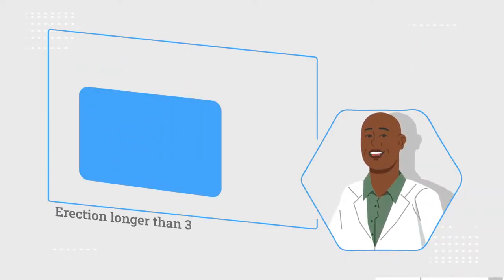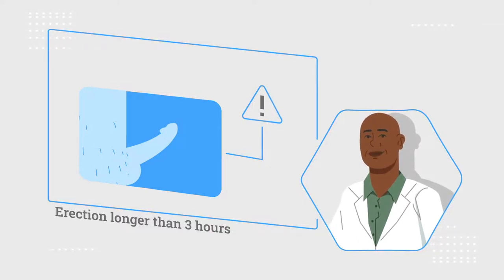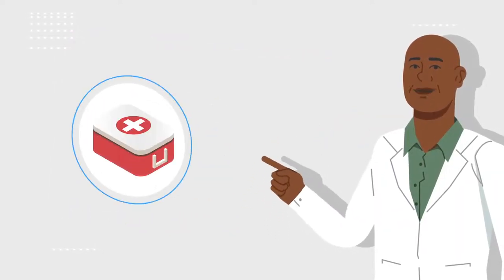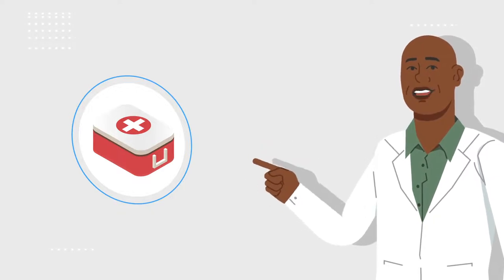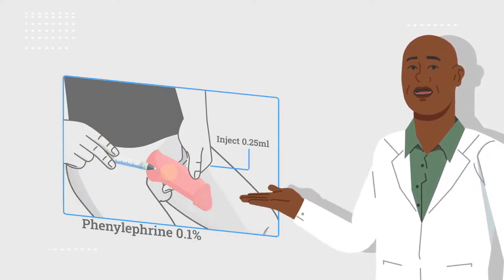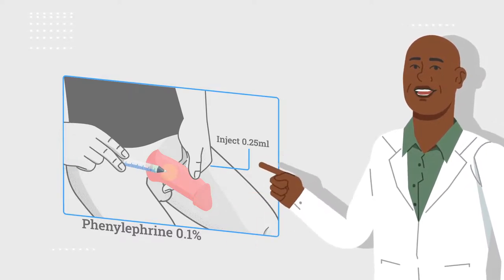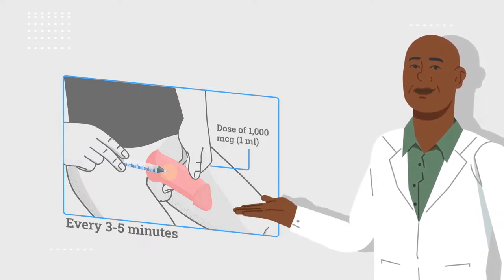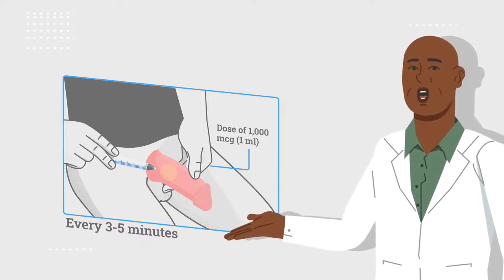If these measures are not effective and you experience an erection lasting longer than 3 hours, there are additional steps to take involving prescription medication options. We strongly recommend you keep this medication on hand at home if you are on a Trimix protocol in the event you experience priapism. Phenylephrine 0.1%. You will inject 0.25 mL into the penis every 3 to 5 minutes or up to a dose escalation of 1 mL for up to 1 hour until detumescence occurs.